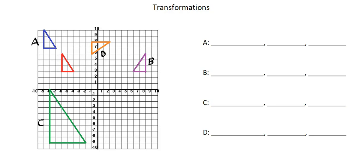In this diagram we have our object, which is the red triangle in quadrant 2, along with four transformations which we need to identify and describe. In evaluating the description of a transformation, it's helpful to keep all four possibilities in mind that we're looking at in the context of IGCSE: translation, reflection, enlargement, and rotation.